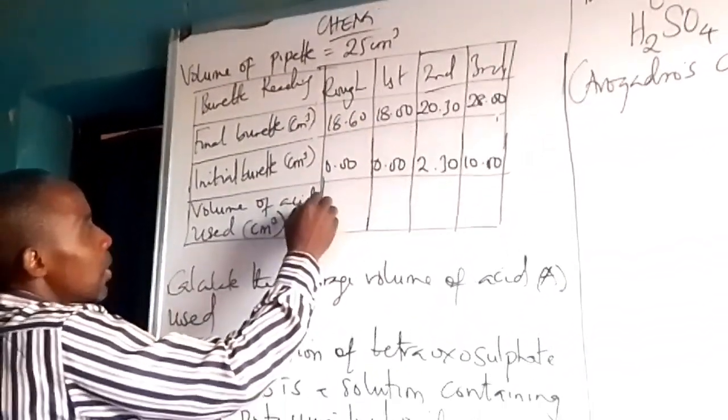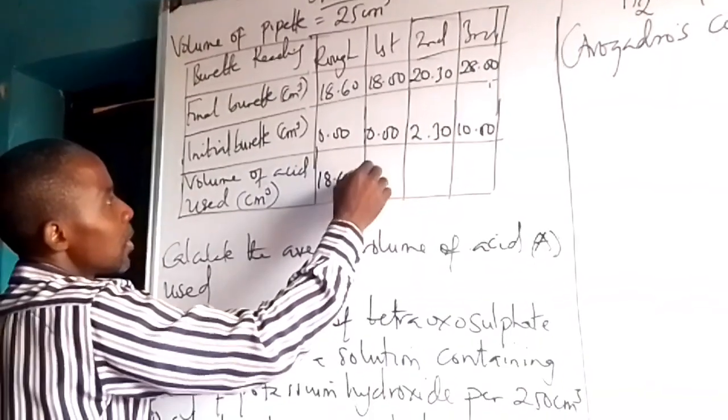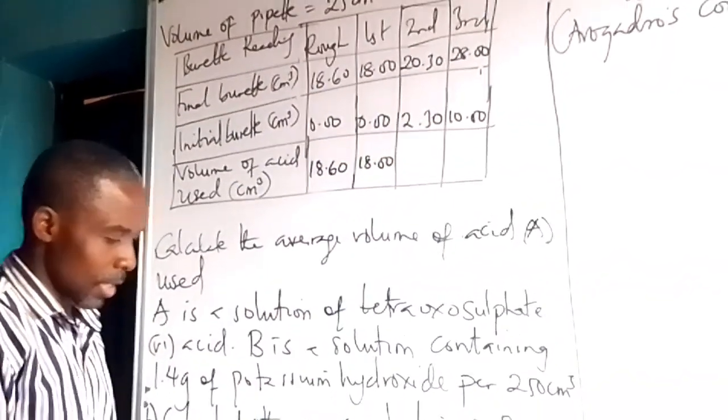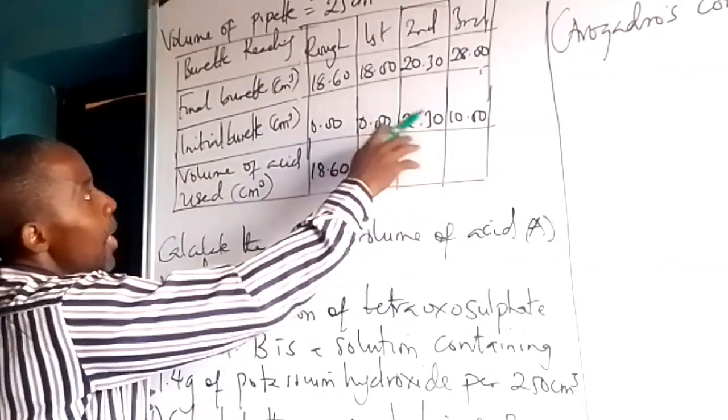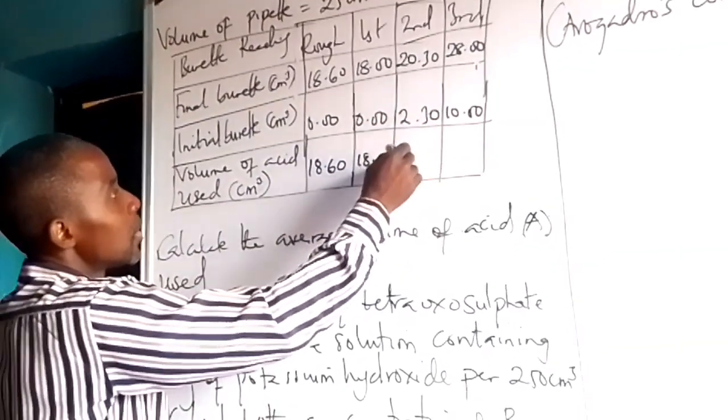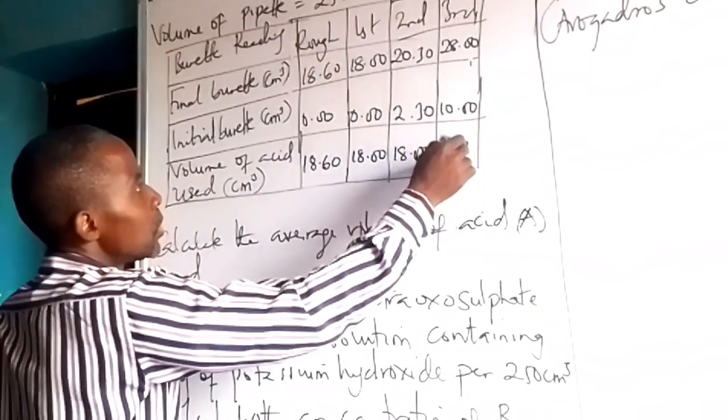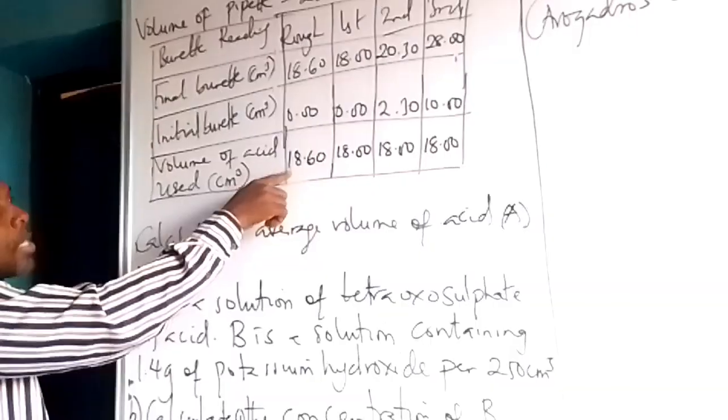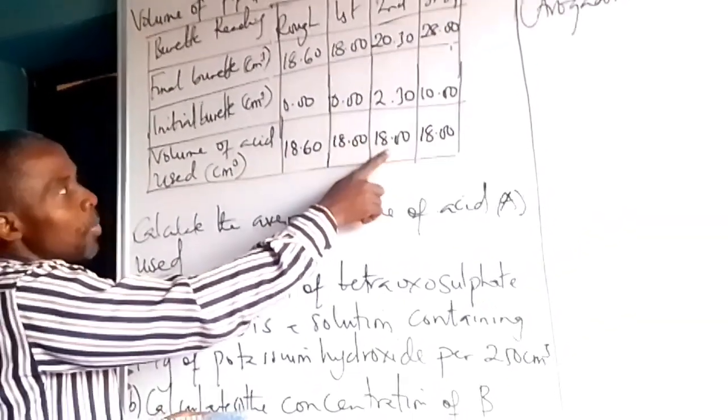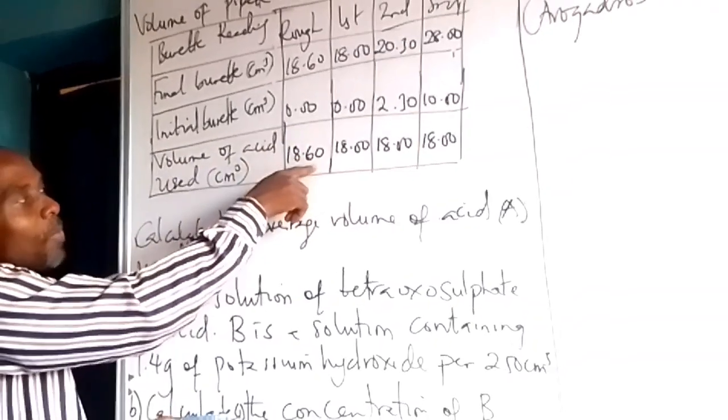So now, this minus this will give you what? 18.60. This minus this will give you what? 18.00. So let's check this one. 20.30 minus 2.0 will still give you what? 18.00. This minus this will also give you what? 18.00. Now when you look at this, you see that this one is 18.60, 18.00, 18.00.